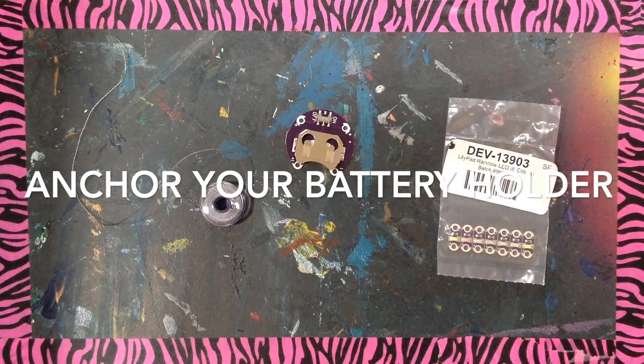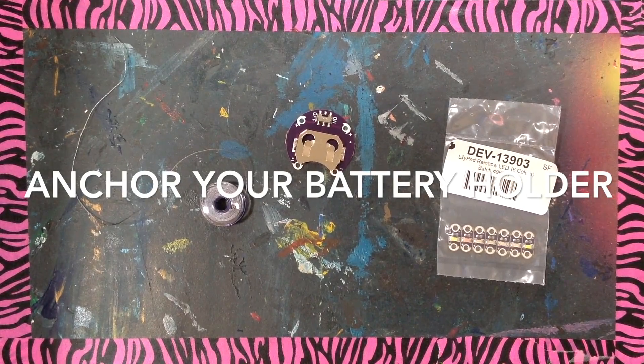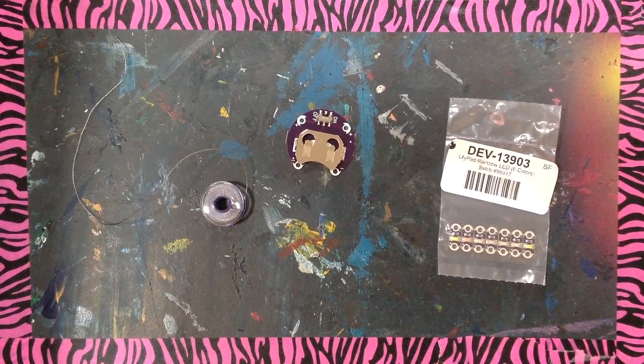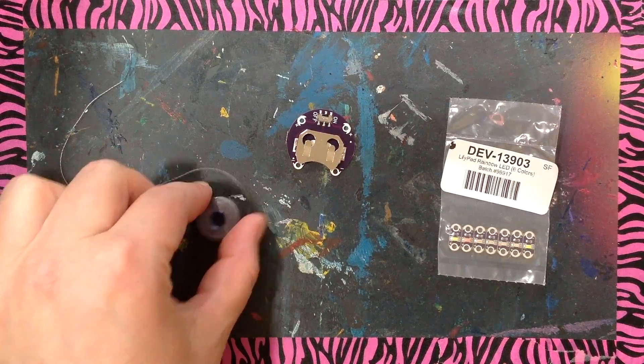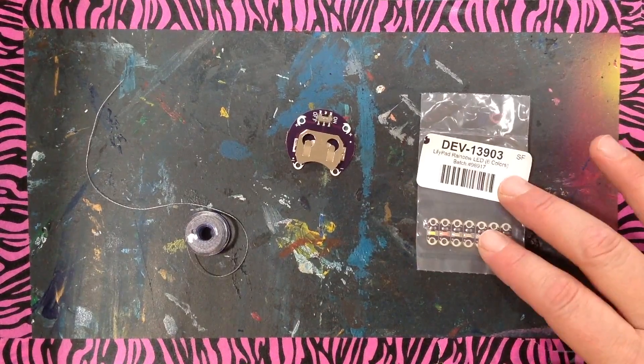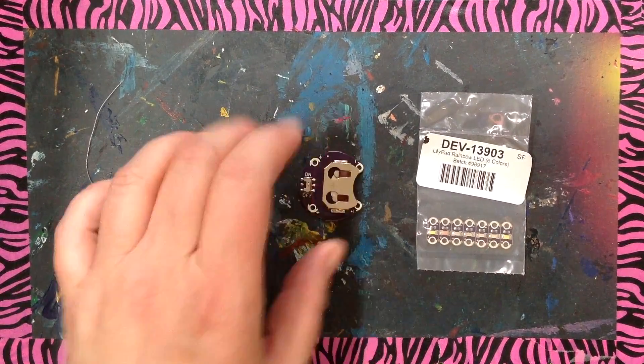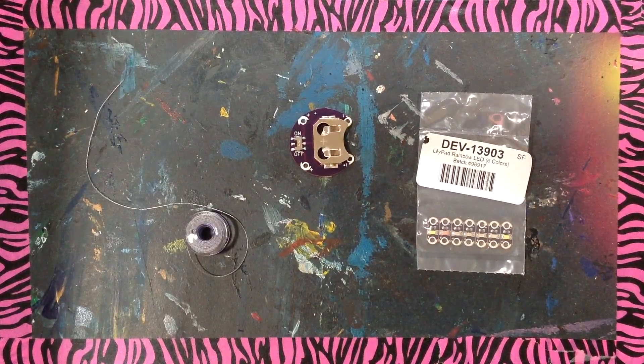I'm here to show you how to create a simple circuit using the running stitch and conductive thread. What you can see right here, this is your conductive thread, these are your LED lights, and this is the battery holder.